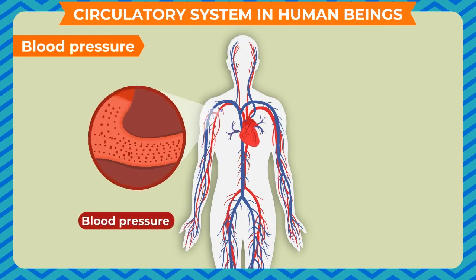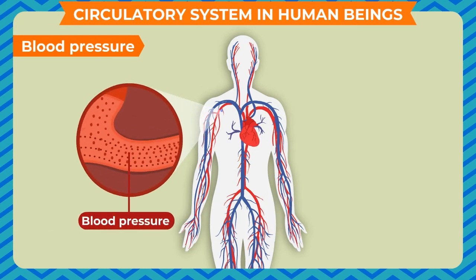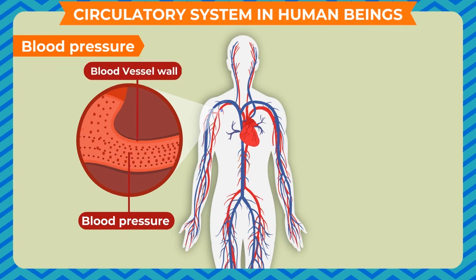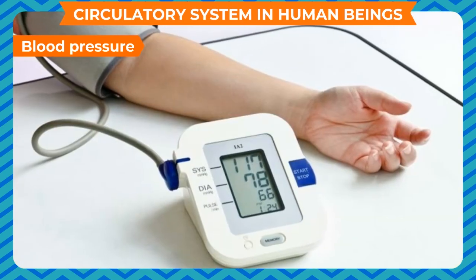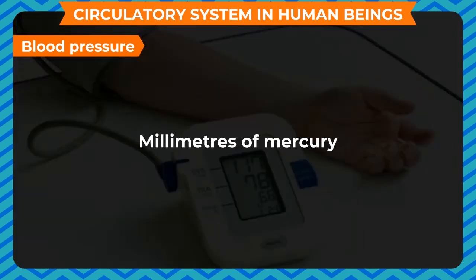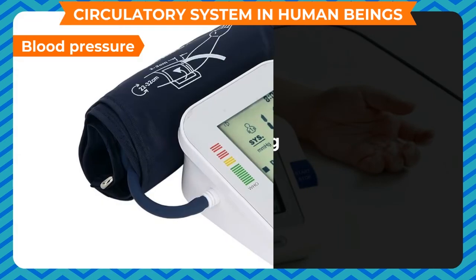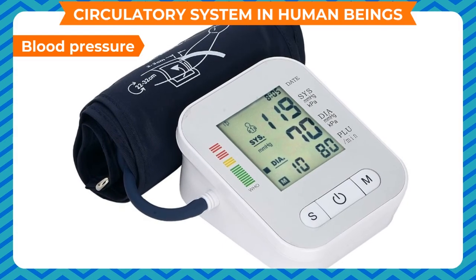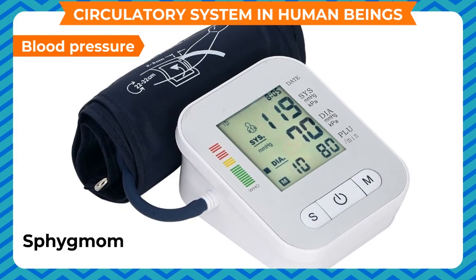Blood pressure is the force exerted by the blood against any unit area of the vessel wall. It is measured in millimeters of mercury (mmHg) using an instrument called a sphygmomanometer.